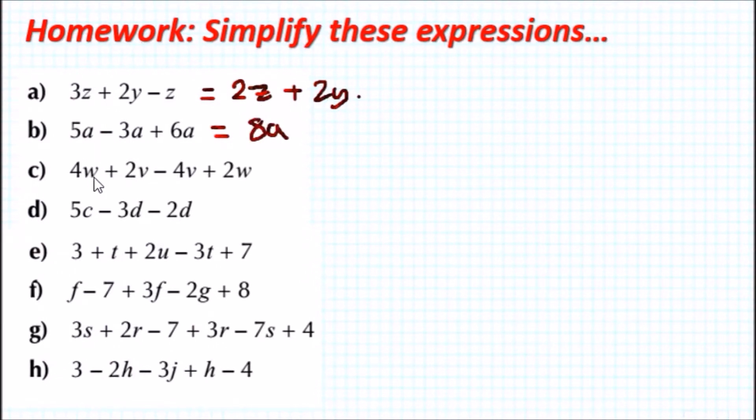For c, we've got 4w + 2v - 4v + 2w. Let's look at the w's first, so we have 4w and 2w, this will give us 6w. And then we have 2v minus 4v, this will give us negative 2v because 2v is smaller than 4v.